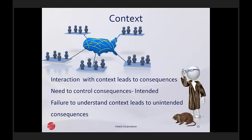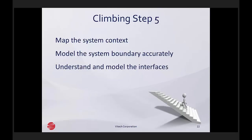So we want to avoid that kind of thing, and we avoid it by understanding the consequences. We need to map the system context. An accurate picture of the system context is necessary to our design, because we need to know how the system is going to interact in that context. We need to model our design system's boundary accurately, and we need to understand and model the interfaces with the context so that we're clear about how this system will function and what all of the consequences are — so that we don't get bitten by unintended consequences in the end.